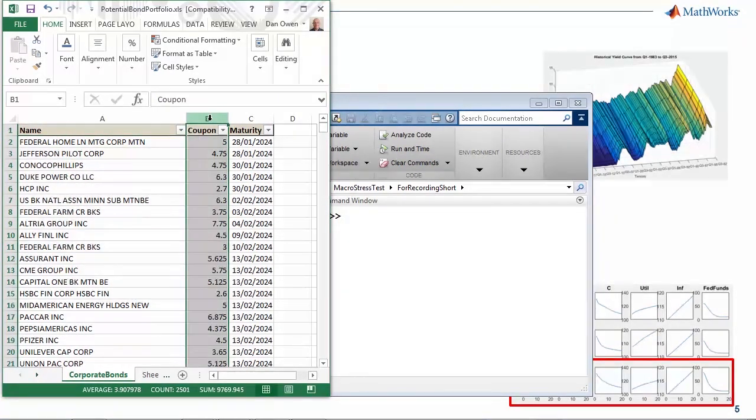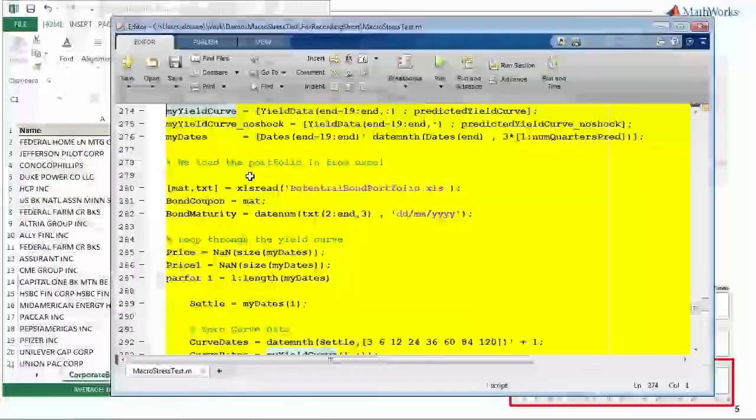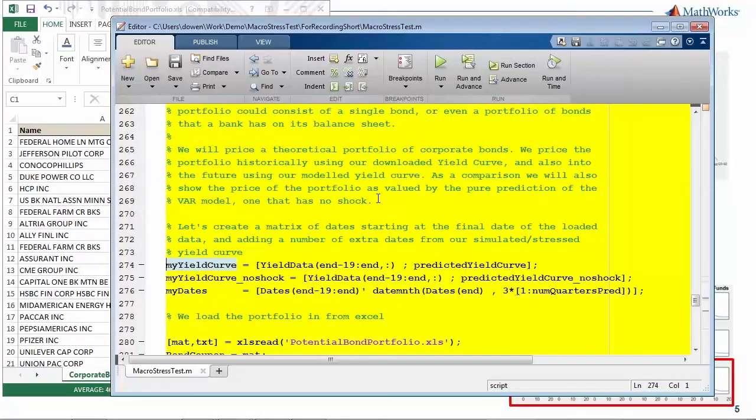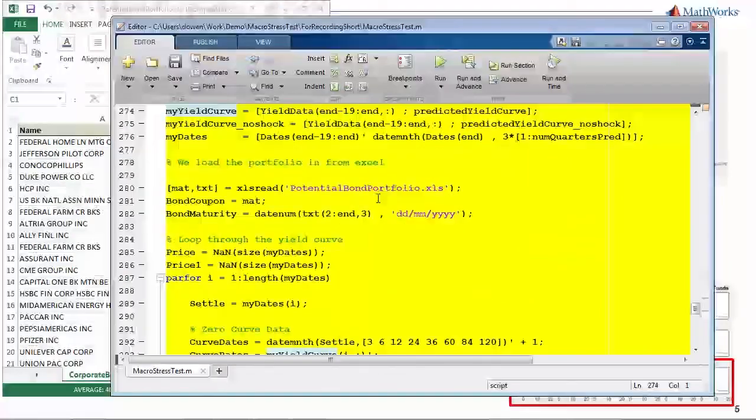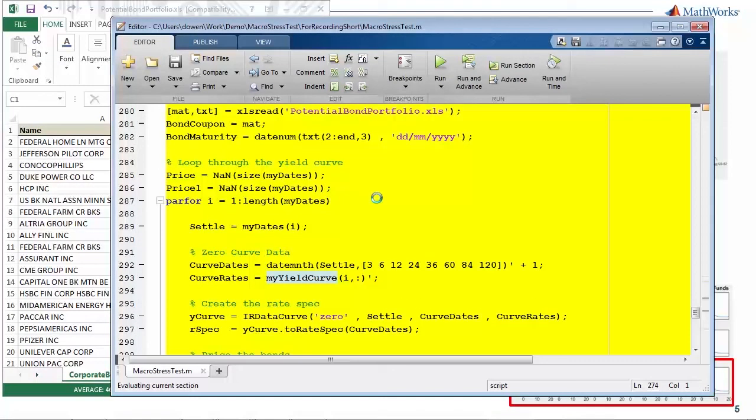And if I go back to MATLAB, what I can do now is price my portfolio of bonds using our Financial Instruments Toolbox. More specifically, I'm using the function bondbyzero, so that prices a bond using a zero curve. I'm also leveraging parallel computing to speed up my computations.